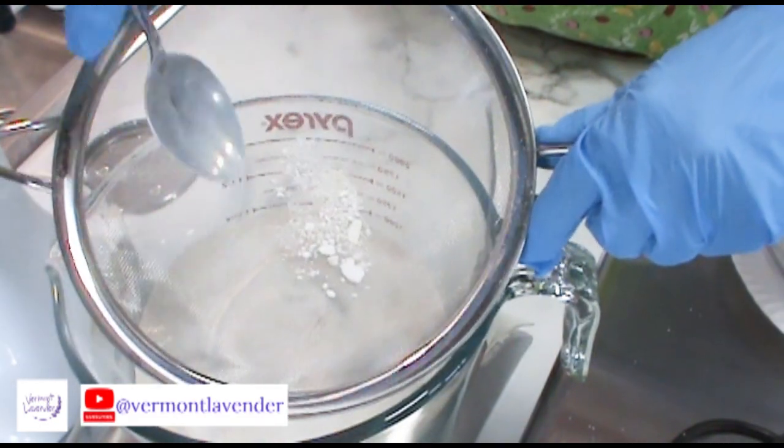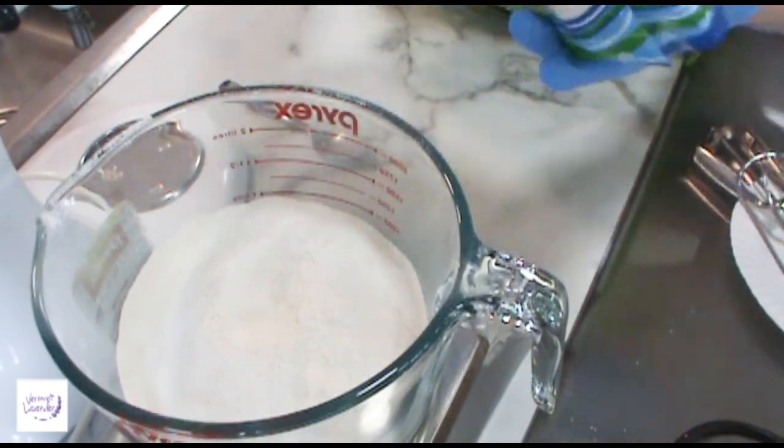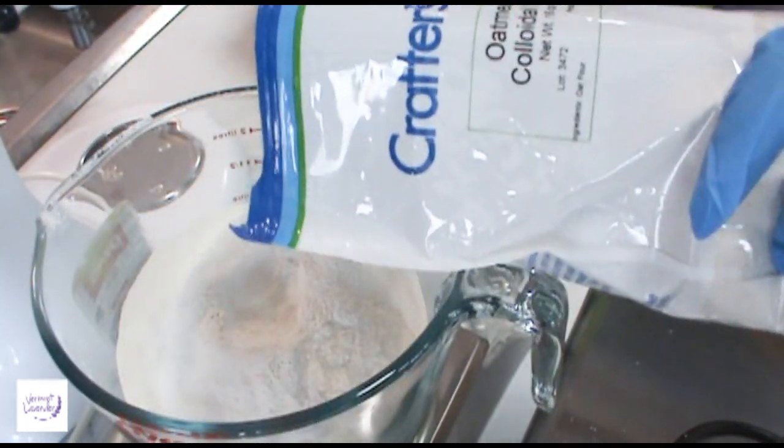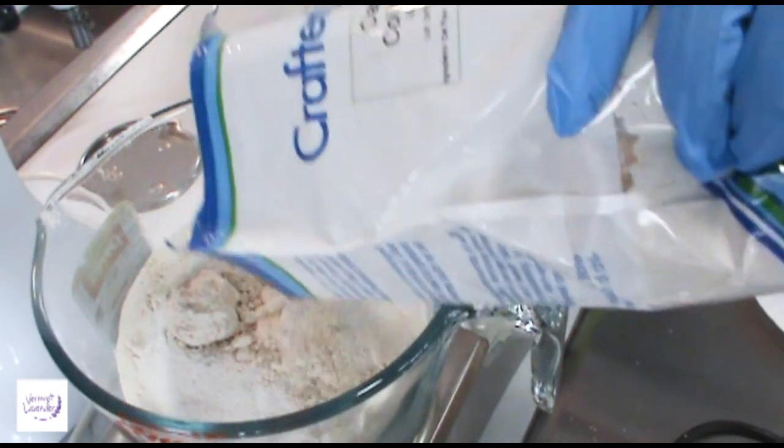You're going to have some little chunks you just want to get rid of. You don't want that in your mixture. I'm going to add colloidal oatmeal, and this is from Wholesale Supplies Plus. It's just where I get a lot of my ingredients. There's another one that's Shea and Company.